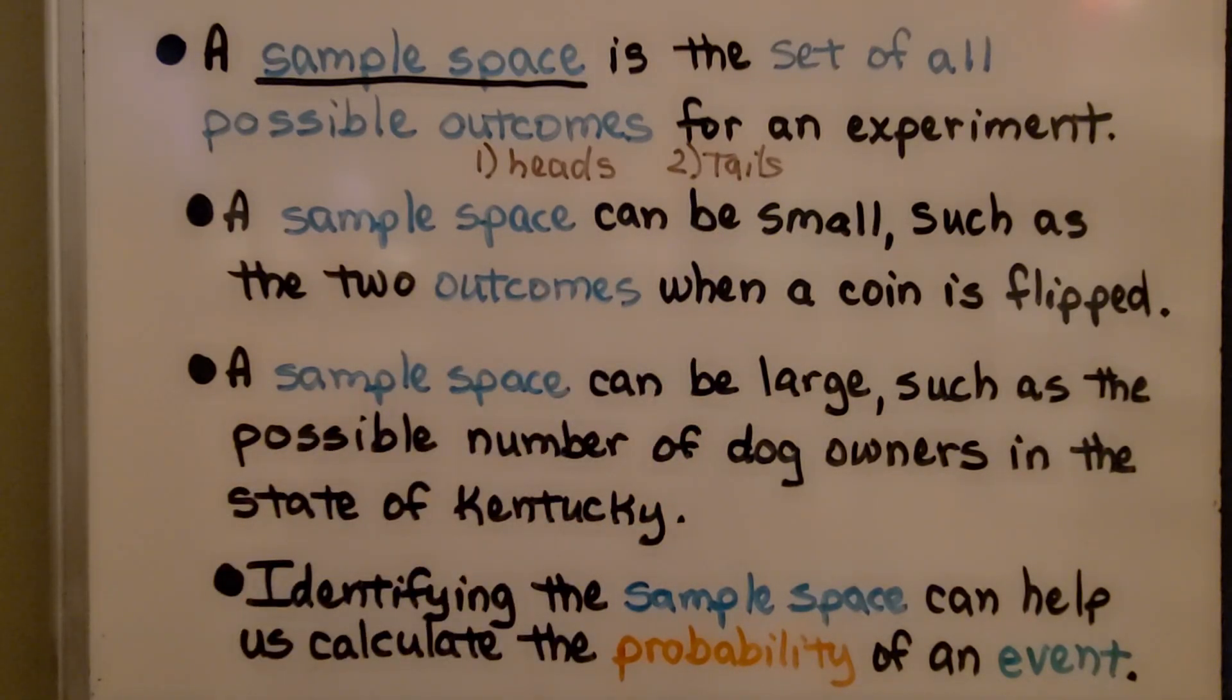A sample space can be small, such as the two outcomes when a coin is flipped. A sample space can be large, such as the possible number of dog owners in the state of Kentucky. Identifying the sample space can help us calculate the probability of an event.